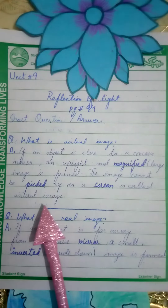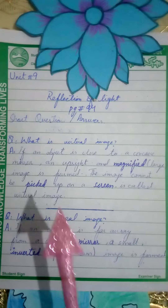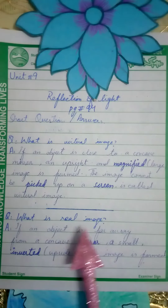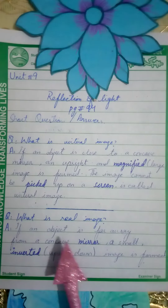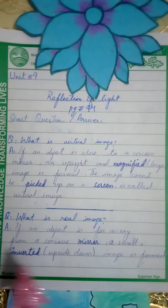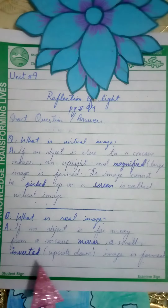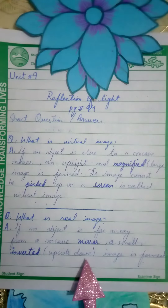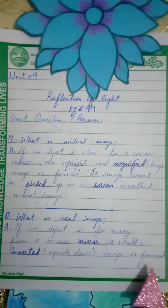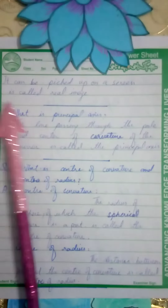This image cannot be picked up on a screen — it is called a virtual image. Question number two: What is a real image? If an object is far away from a concave mirror, a small inverted (upside down) image is formed.